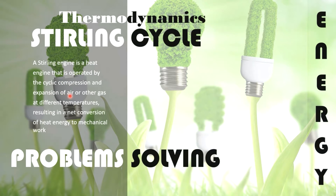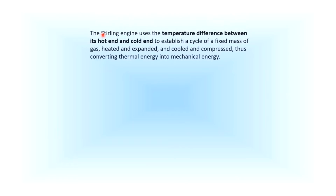A Stirling engine operates using air or other gas at different temperatures, resulting in a net conversion of heat energy to mechanical work. The Stirling engine uses the temperature difference between its hot end and cold end to establish a cycle of a fixed mass of gas — heated and expanded, then cooled and compressed. The greater the temperature difference, the greater will be the work output of the engine.